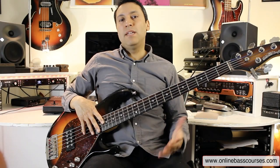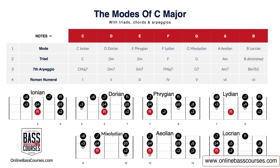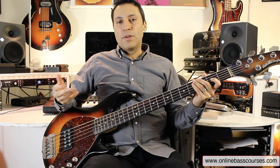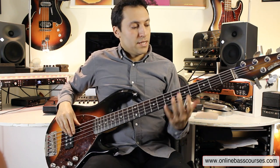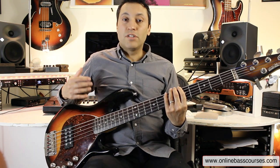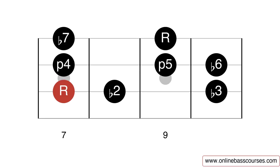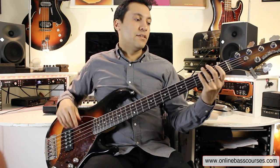Next, we have an E minor 7 to an F major 7 chord progression. You can see that's the 3 to the 4, and the 3 chord is the Phrygian mode. E Phrygian is just E F G A B C D E. And the F — F Lydian, F to F.